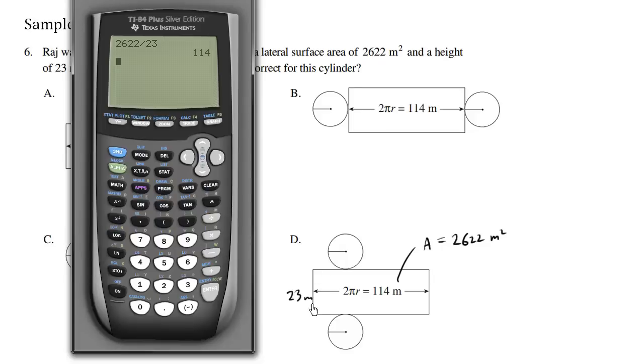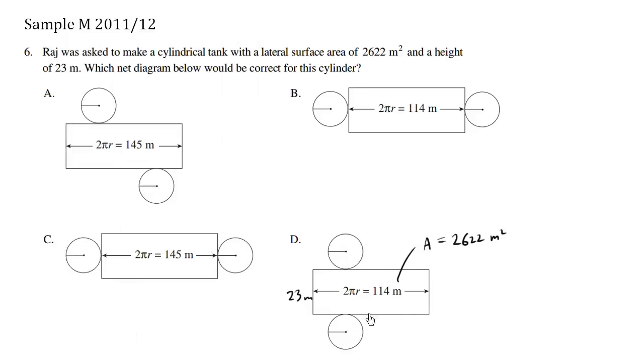So given the area, given the height, our width here should be 114. So we see here that this is plausible as well as choice B. This is 145, this is 145, so immediately we eliminate these two choices.